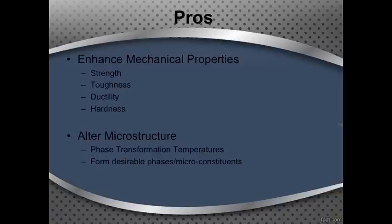You can change the temperatures at which these phases form. For example, if you're trying to form martensite, you can increase the martensite start-stop temperatures. You can also change the eutectoid temperatures with different alloying elements. So there are a lot of different things you can do to really use these alloying elements to your benefit.